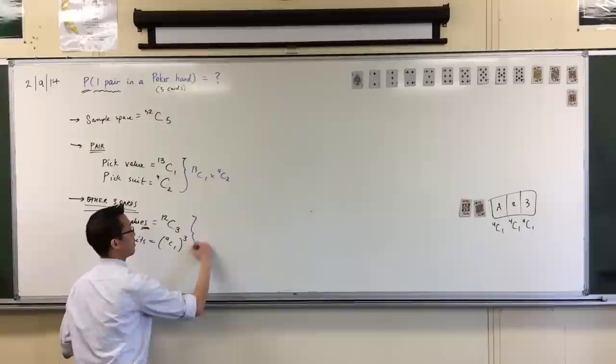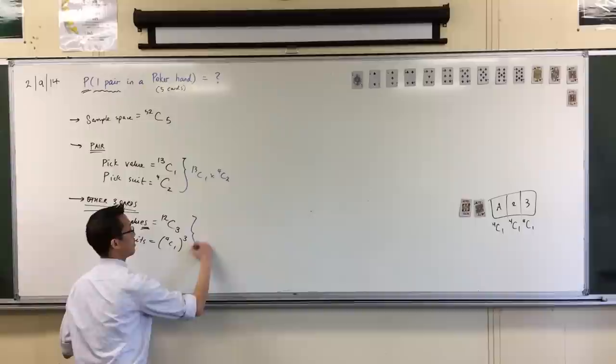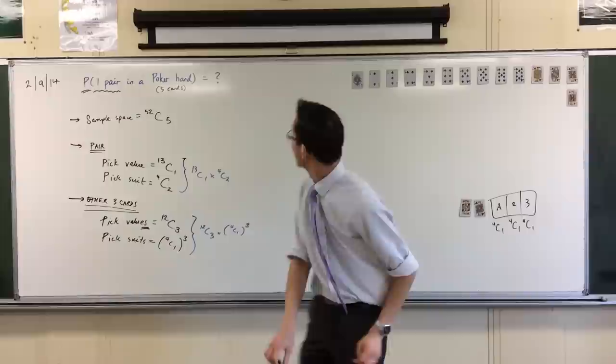So, what we've just worked out, this pair over here, twelve choose three times four choose one cubed. That's the number of ways that I can pick the remaining three cards.